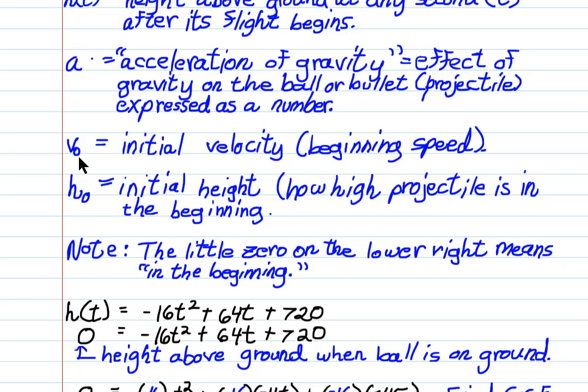v naught, v sub zero, is the initial velocity. It's a number. This is not a variable. Anytime you see a little zero down beside the letter, it means that this is not a variable, it's a number. And what this number is going to represent, or actually be, is the initial velocity, the speed at which the ball is thrown up. If the ball is just dropped, then v naught would be zero. But it's not. This is actually thrown up at a speed of 64 feet per second.